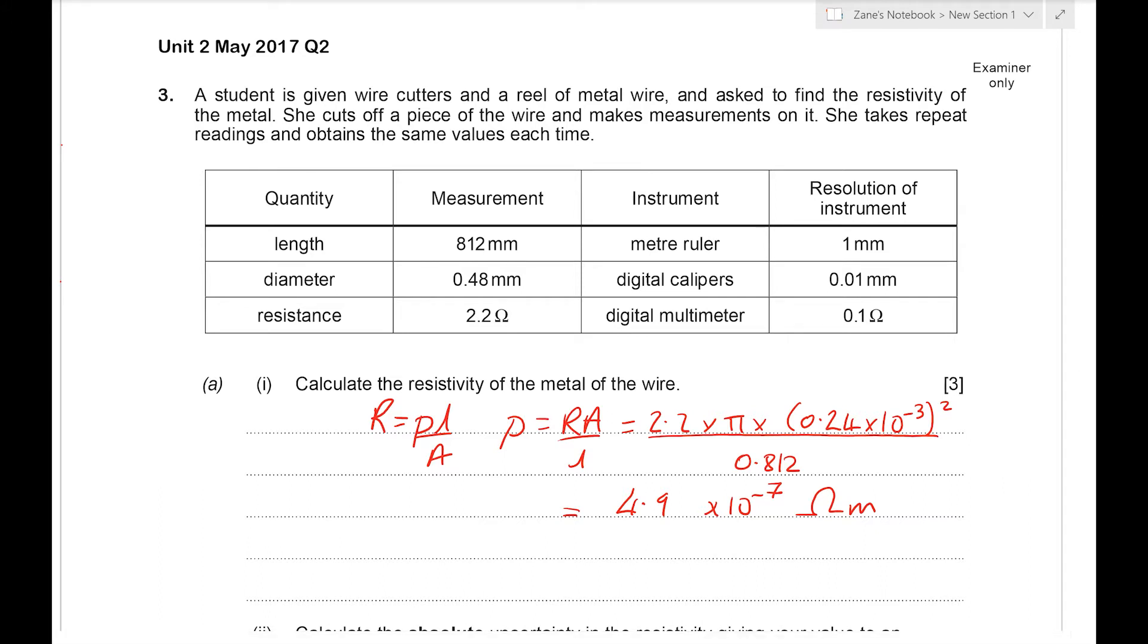But we could also go for three significant figures by putting 4.90 times 10 to the minus seven. It is a zero on the calculator because the length is three significant figures. But the general rule with uncertainties is that the least number of significant figures weighs more than the others when we come to rounding our final answer. So 4.9 times 10 to the minus seven, best answer.